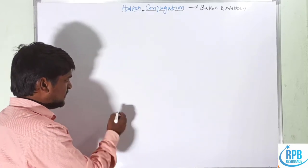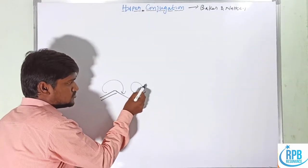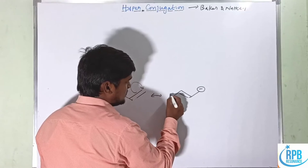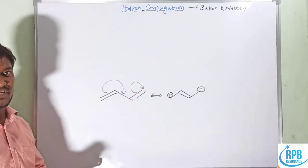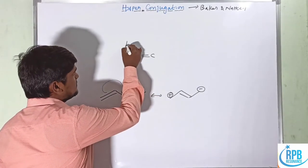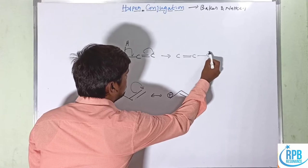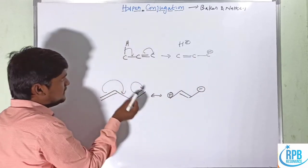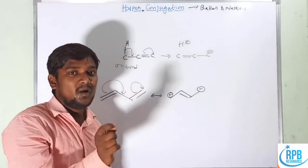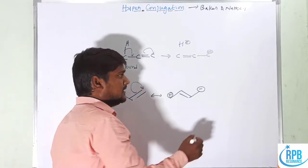Hyperconjugation was introduced by two scientists, Baker and Nathan, that's why it is also called the Baker-Nathan effect. Both terms — Baker-Nathan effect and hyperconjugation — refer to the same concept. It is a special kind of resonance effect where sigma bonding electrons are transferred, unlike normal resonance where pi electrons shift.